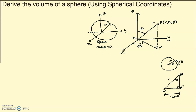Let me remind you quickly what spherical coordinates are. Here's our x, y, z three-dimensional space. Instead of using x, y, z coordinates we're going to use r, theta, and phi. So r is the distance from the origin to our point in space, and then theta is the angle that the line connecting the origin to point p makes with the z-axis. And phi is the angle that the x-axis makes with the line connecting the origin to the projection of point p on the x, y plane — that projection is called p-bar.